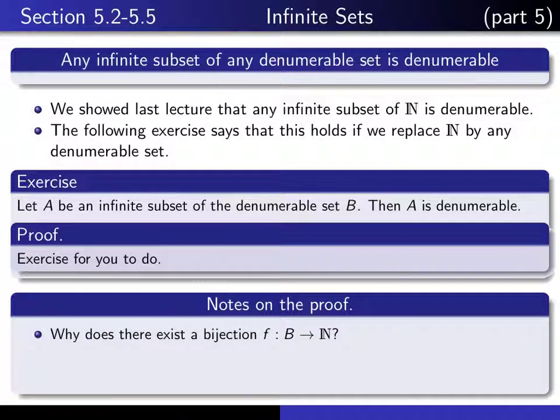First off, why is it the case that there exists a bijection f from B into N? Maybe it has something to do with this.